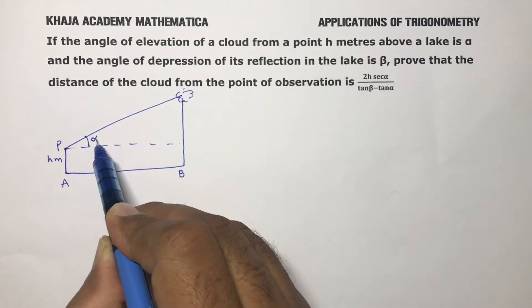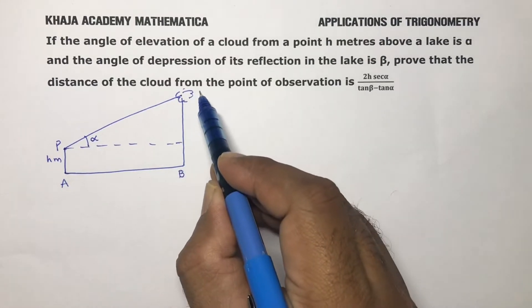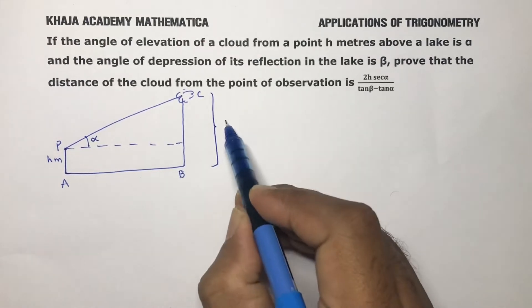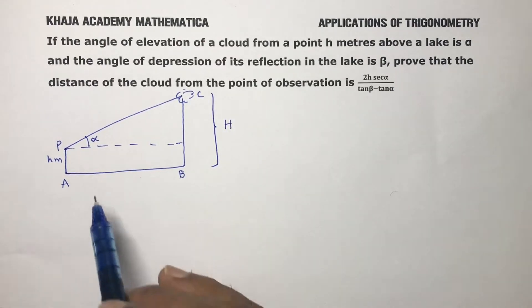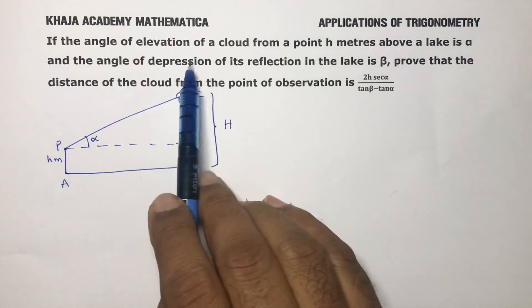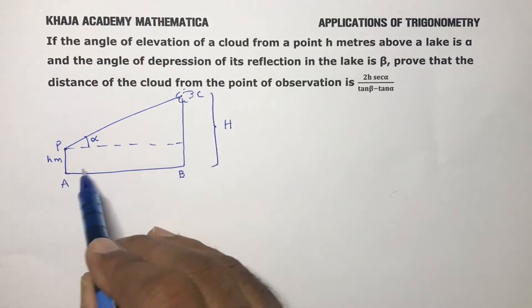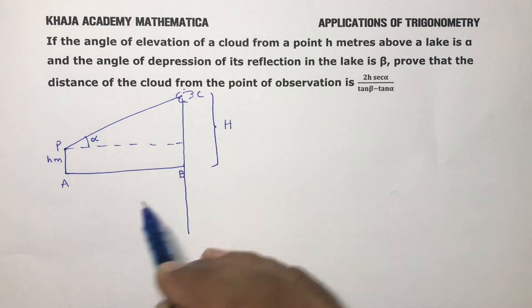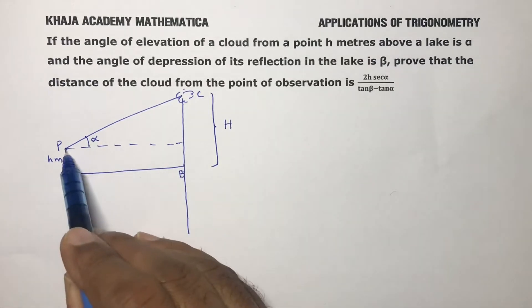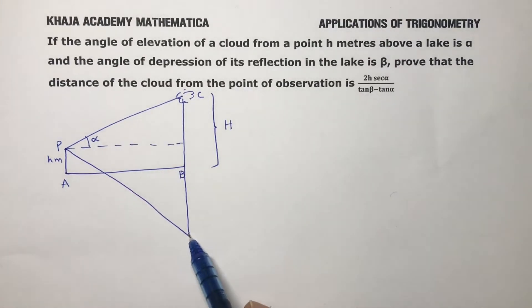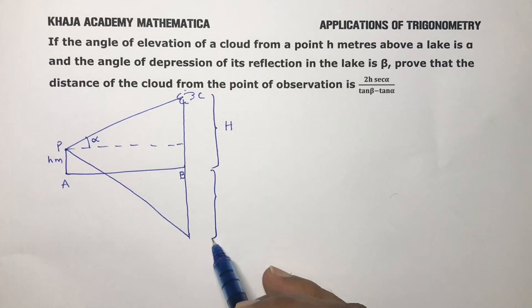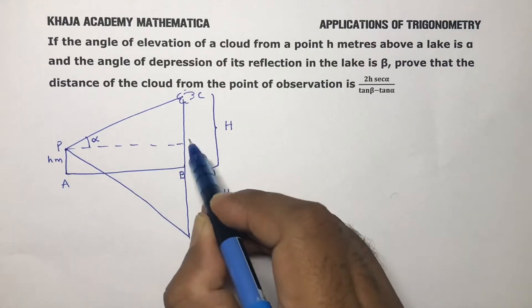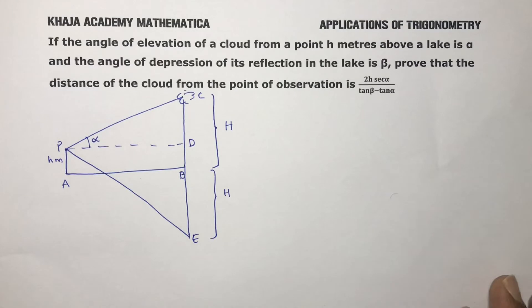Let the height of the cloud from the lake be capital H. Now, the angle of depression of its reflection — since the lake acts like a plane mirror, the image will also be at the same distance. So BD equals h, and this image point we can consider as E.